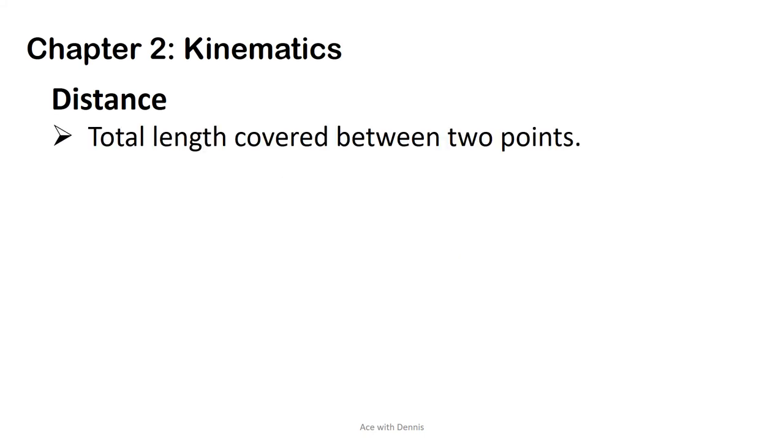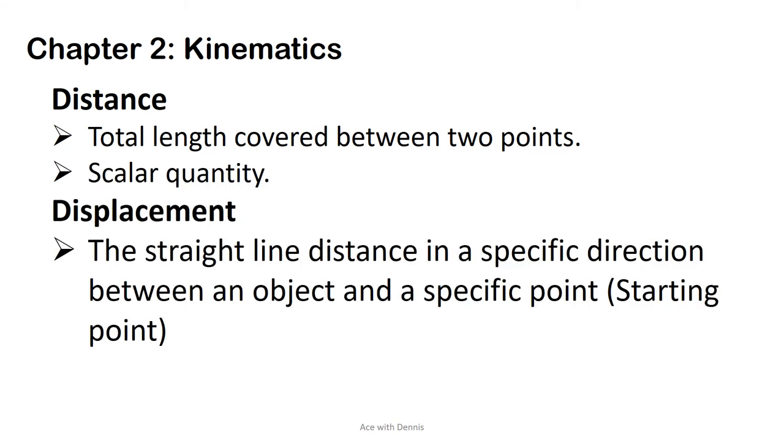Distance: Distance is the total length covered between two points. It is a scalar quantity. Displacement: Displacement is the straight line distance in a specific direction between an object and a specific point. Usually this point is the starting point. Displacement is a vector quantity.